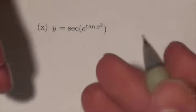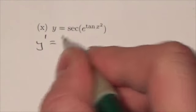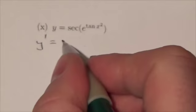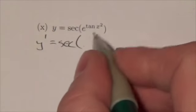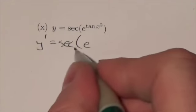The outer function is the secant here. So the derivative of secant is going to be secant tangent. So this will be secant of e to the tangent of x squared times the tangent of e to the tangent of x squared.